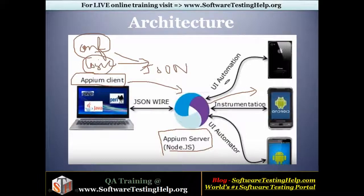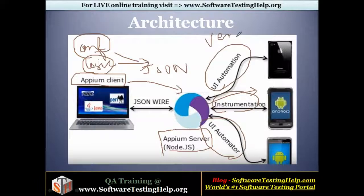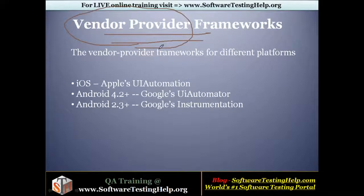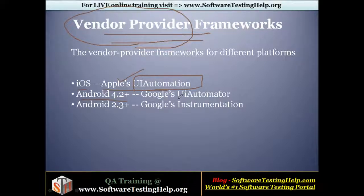You can see UI Automation, Instrumentation, and UI Automator — these are vendor provider frameworks that help APM support automation on various platforms. Each OS has its specific vendor provider framework: iOS uses Apple's UI Automation framework, developed by Apple itself. Android 4.2+ uses a framework called UI Automator, and Android 2.3+ uses a framework called Instrumentation. Using these frameworks, APM can perform automation on multiple platforms.